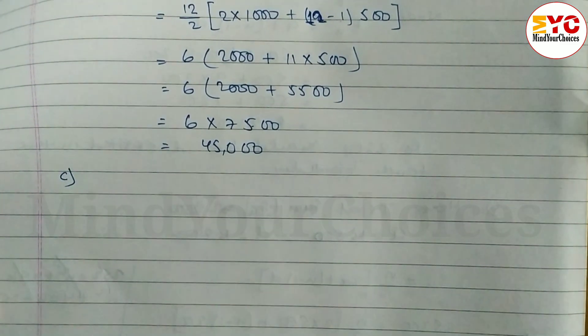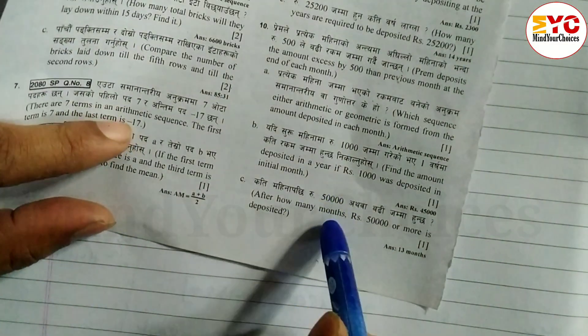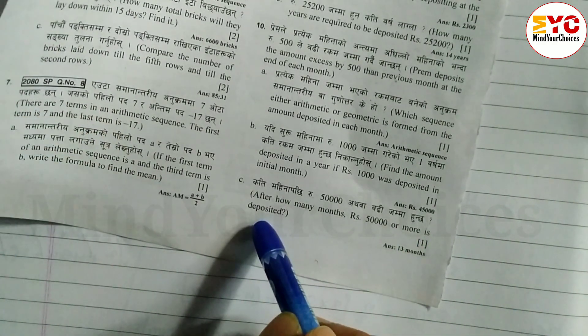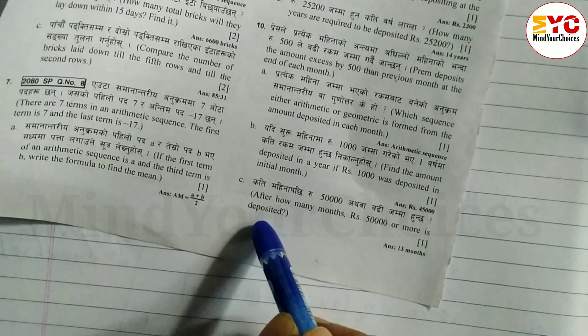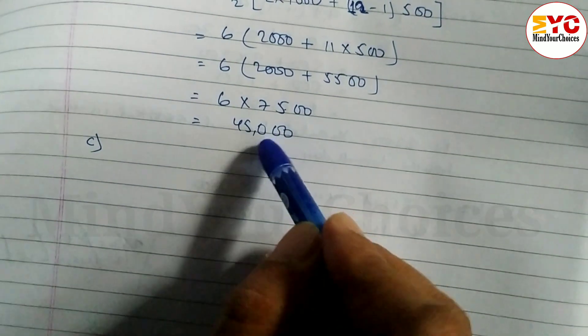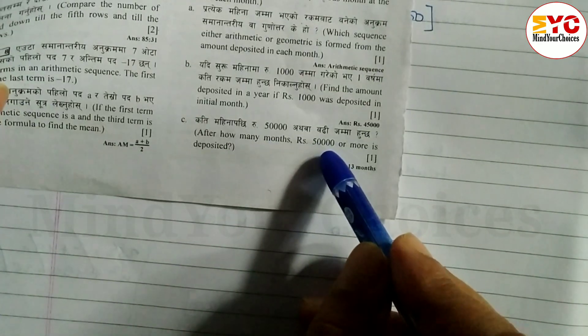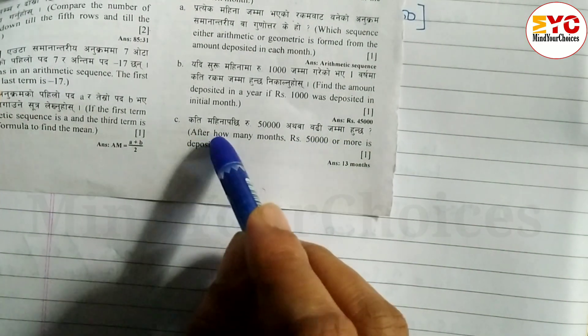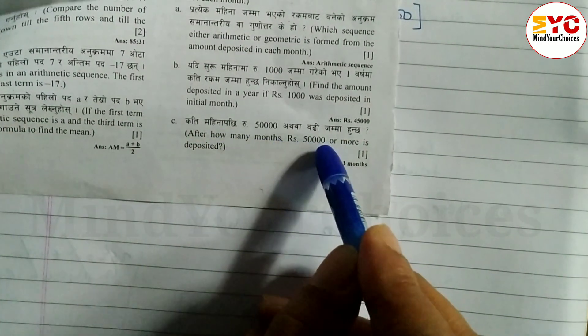Now look at question number c: After how many months is rupees 50,000 or more deposited? In 12 months we deposited 45,000, so we need more than 12 months to reach 50,000.